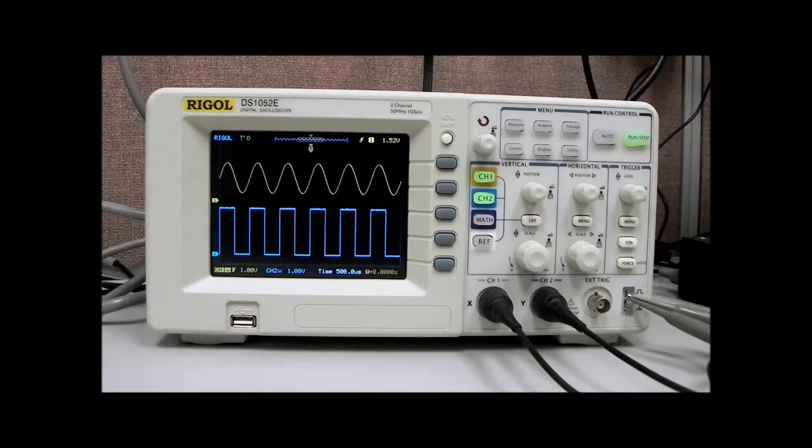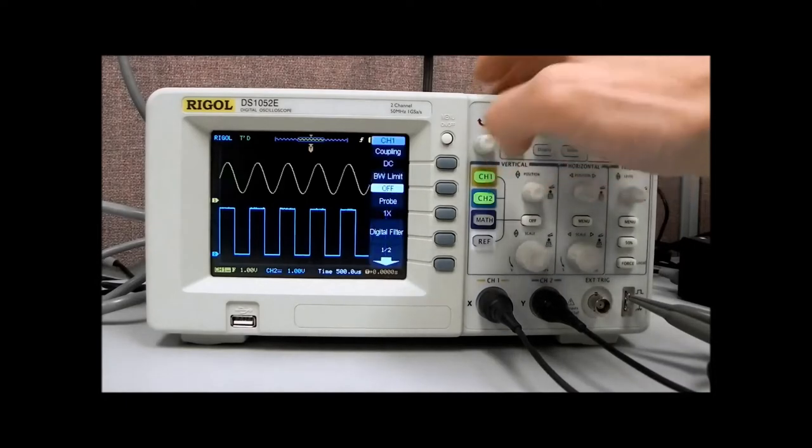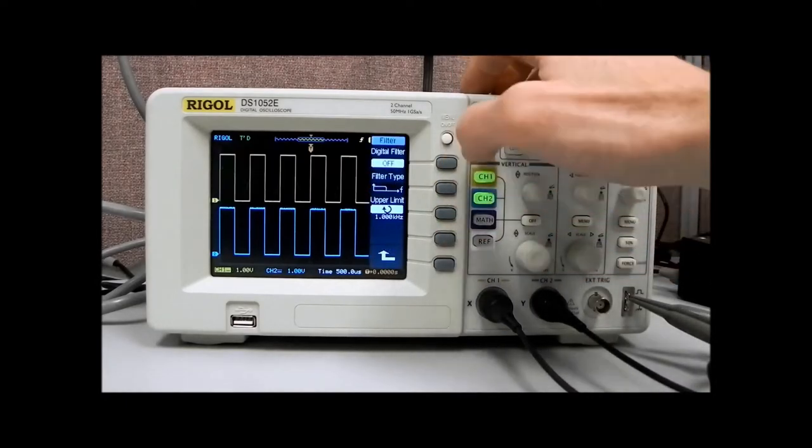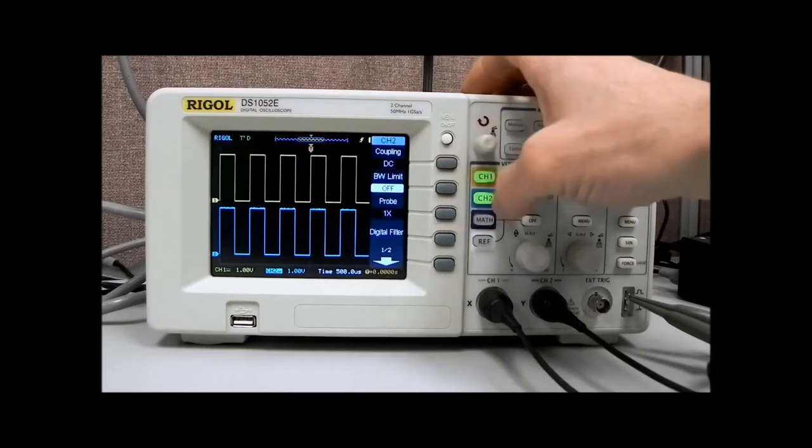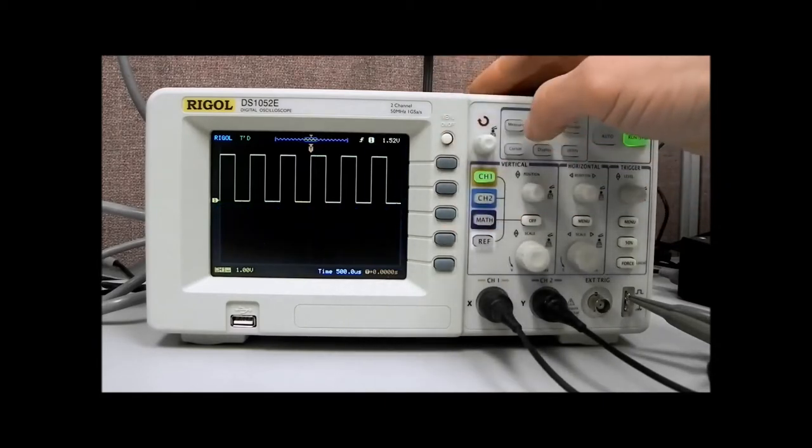Now let's take a look at the DS-1000 series measurement capabilities. I'm going to turn off the digital filter on channel 1, and I'm also going to disable channel 2 just so we have a little bit more room on the display.